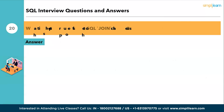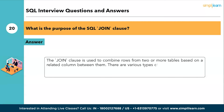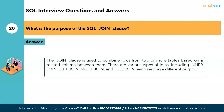The twentieth question: what is the purpose of the SQL JOIN clause? The JOIN clause is used to combine rows from two or more tables based on a related column between them. There are various types of joins, including inner join, left join, right join, and full join, each serving a different purpose in combining data from multiple tables.